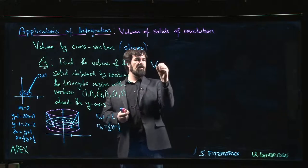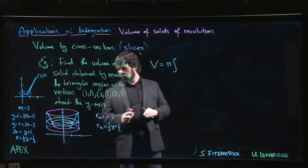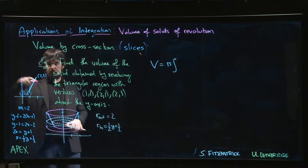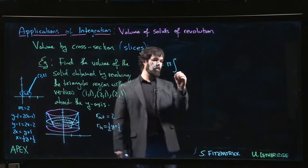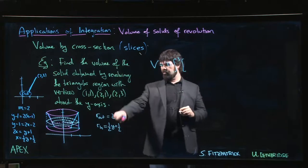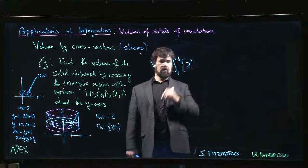The rest is just the integral. So y ranges here in this problem, y starts at 1, goes up to 3. Outer radius is just 2, so we square that, minus the inner radius squared.